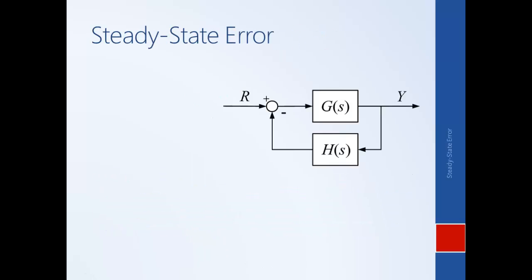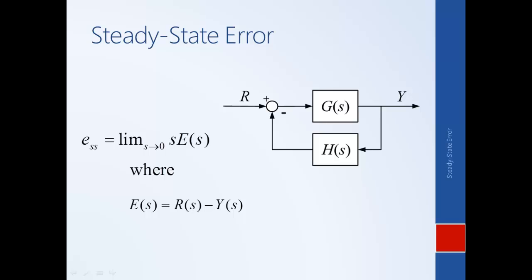We've actually already calculated steady state error in some previous modules. The way we did that was simply to apply the final value theorem: E steady state equals the limit as s approaches 0 of s times E(s), where E(s) is the difference between the command and the output. So we have some reference r, which is our desired output, and we compare it to the actual output — the difference between those two is the error.